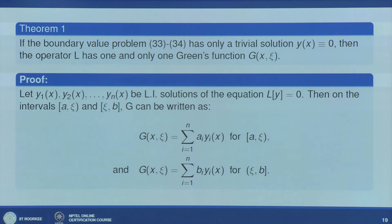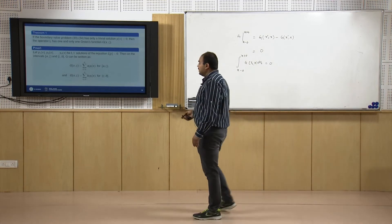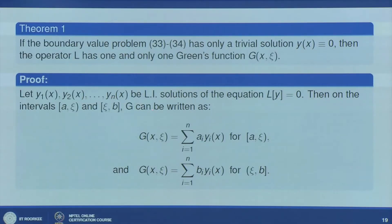We now prove this theorem. Let y₁(x), y₂(x), …, yₙ(x) be n linearly independent solutions of Ly = 0. Then g(ξ,x) can be written as Σᵢ aᵢyᵢ(x) for ξ ∈ (a, ξ), and as Σᵢ bᵢyᵢ(x) for ξ ∈ (ξ, b), since g is a solution of L in each interval. We need to find aᵢ and bᵢ.